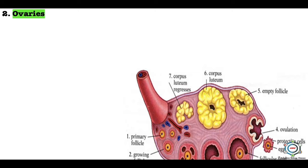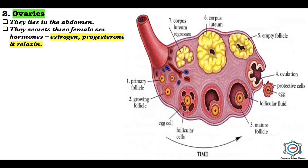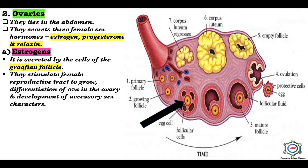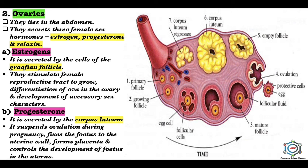The second part of the gonads is the ovaries, which lie in the abdomen and secrete three female sex hormones: estrogen, progesterone, and relaxin. Estrogen is secreted by the cells of the Graafian follicle; it stimulates the female reproductive tract to grow, differentiation of ova in the ovary, and development of secondary sex characters. Progesterone is secreted by the corpus luteum; it suspends ovulation during pregnancy, fixes the fetus to the uterine wall, helps form the placenta, and controls the development of the fetus in the uterus.